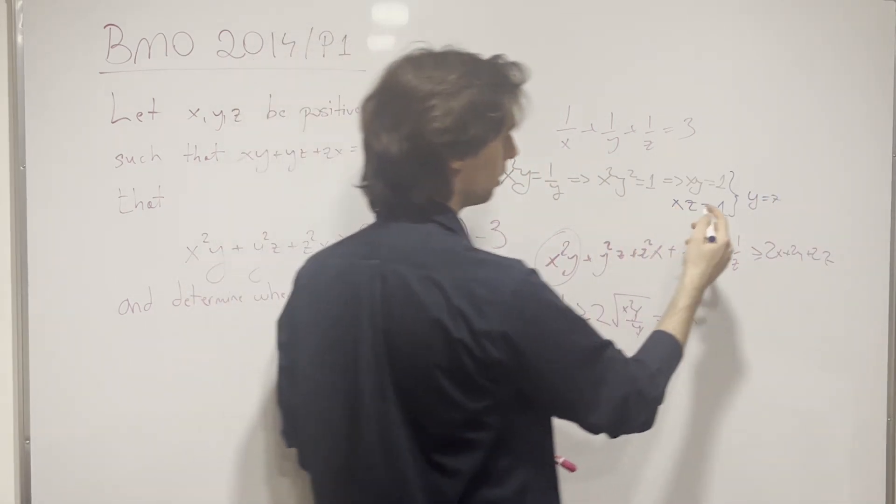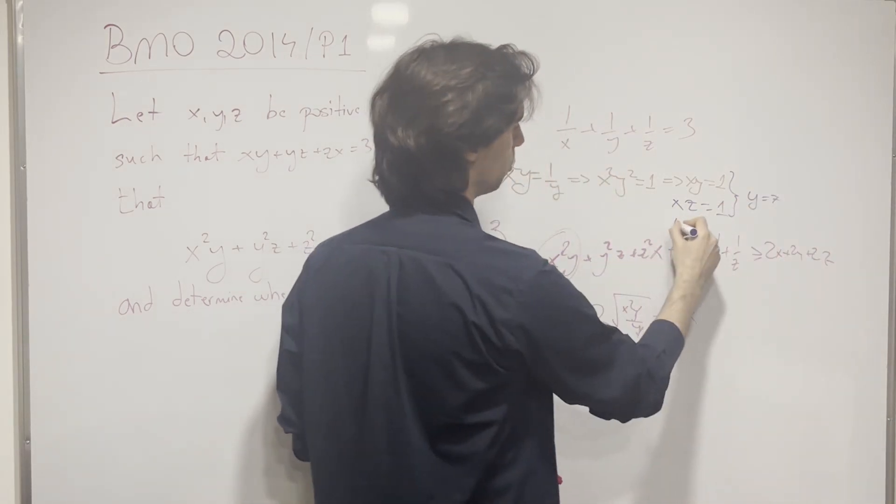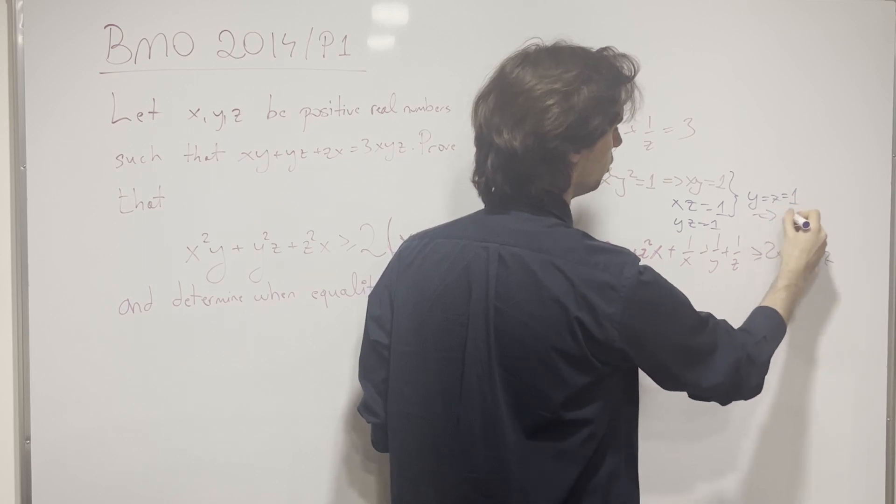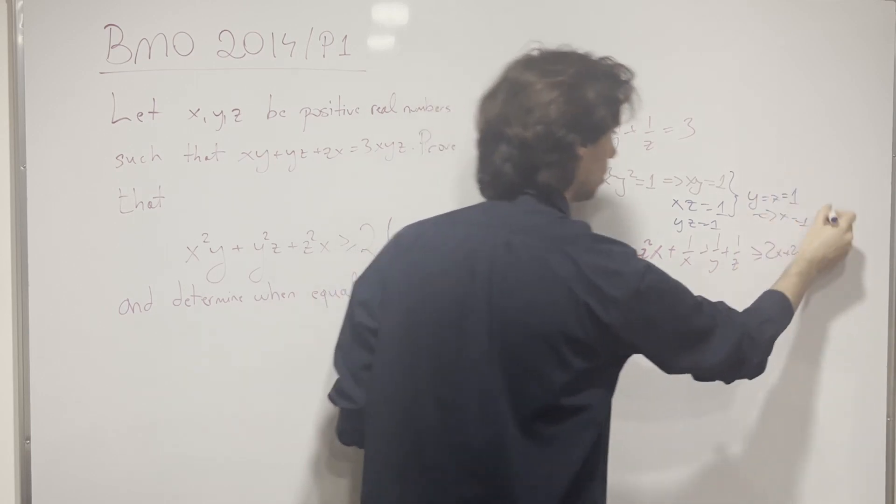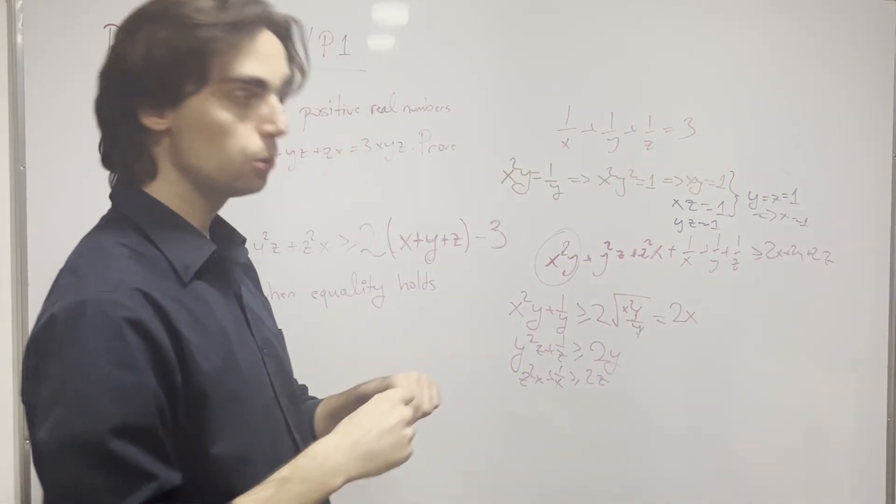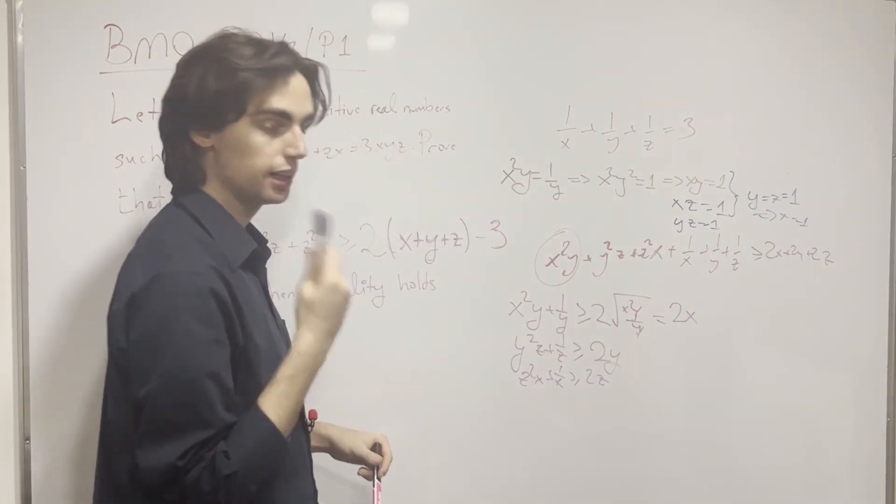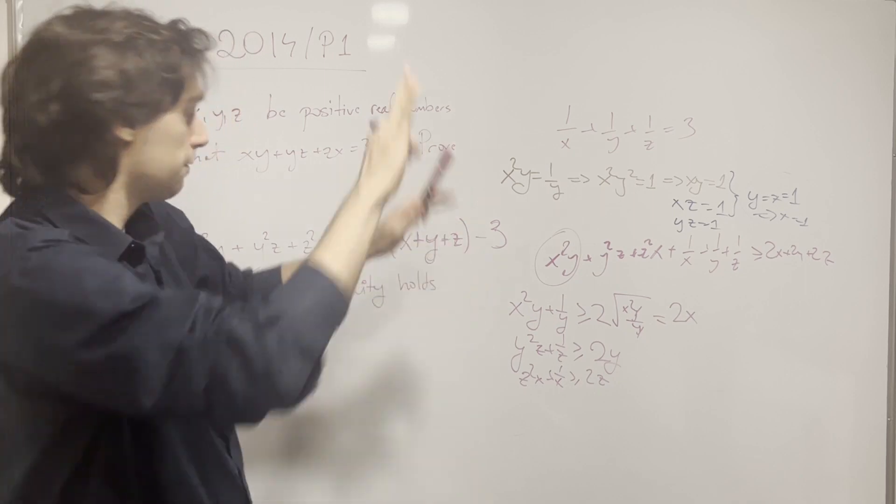And these two things imply that y is equal to z. And from there on, we get that, from the yz equals 1, we get y is equal to z is equal to 1, which then implies x is equal to 1. So the equality holds true if and only if all of these x, y, and z are 1. And that finishes up the problem.